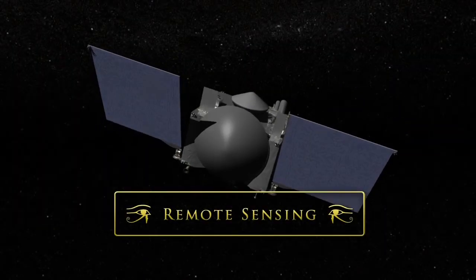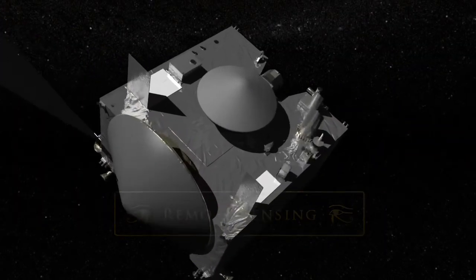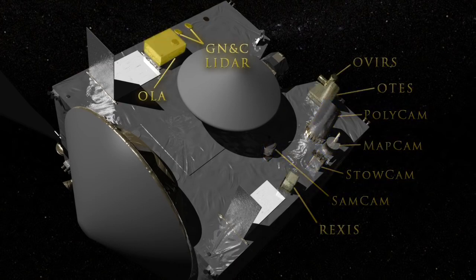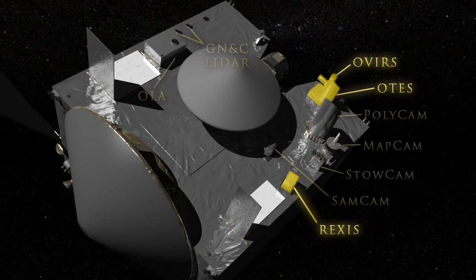The OSIRIS-REx payload contains several instruments for remote-sensing observations, including high-resolution cameras, LIDAR, and X-ray visible light and infrared spectrometers.